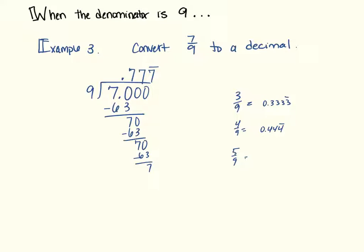Same for 5 ninths, it's that number that's on top repeated, 6 ninths, 0.6666666. And so on and so forth, until you get an improper fraction, which sort of changes things. Let's move on.